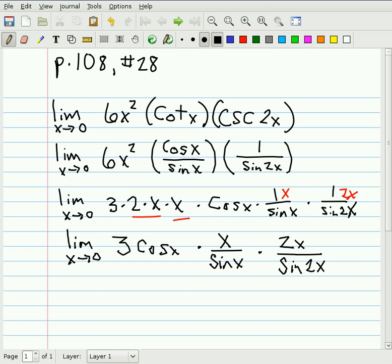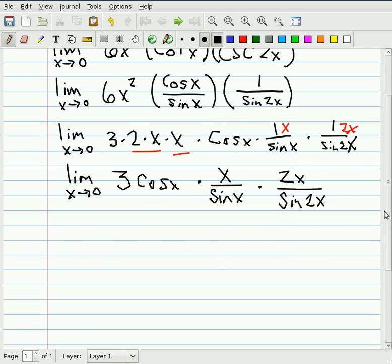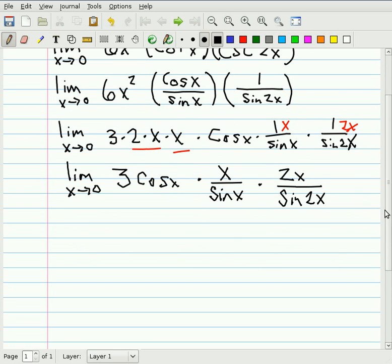Now using our product rule for limits, we can evaluate this limit. The constant stays a 3. Cosine of x as x goes to 0 is 1. x over sine of x as x goes to 0 is 1. And 2x over sine 2x as x goes to 0 is 1.